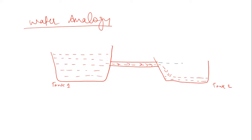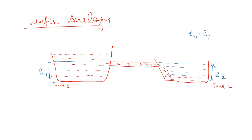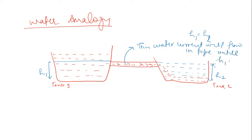Water will flow until this tank reaches the same level. So if this height and this height of the water — h1 and h2 — if h1 is equal to h2, this water current will not flow. So this water current will flow in the pipe until h1 is not equal to h2, or h1 is greater than h2.